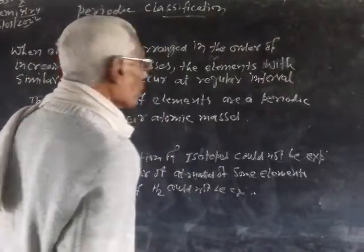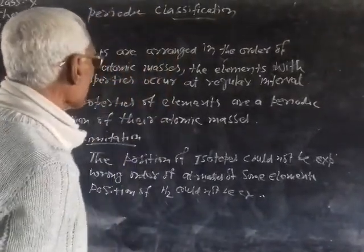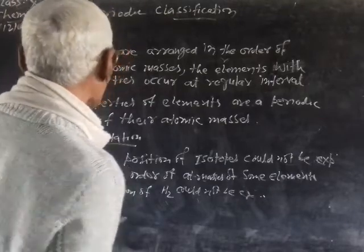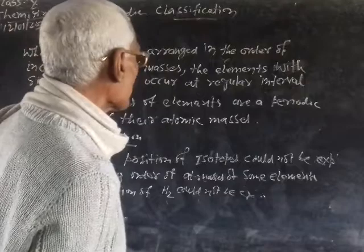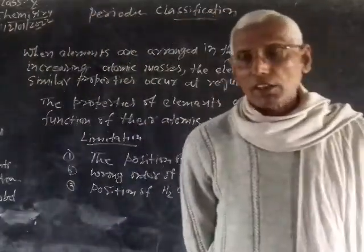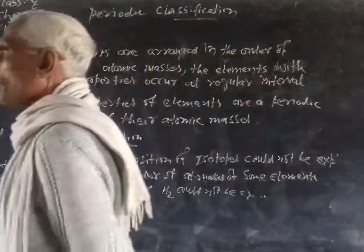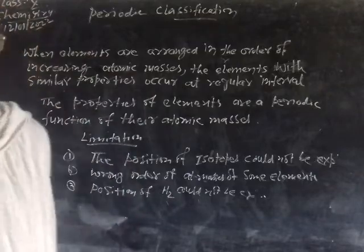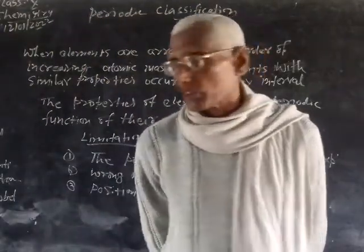Mendeleev arranged elements in such a way that when elements are arranged in the order of increasing atomic masses, the elements with similar properties occur at regular intervals. This is based on periodic classification. Mendeleev's classification is based on atomic masses.